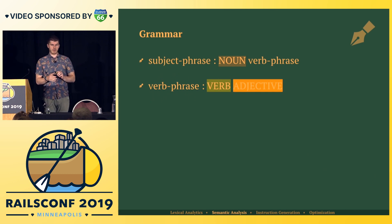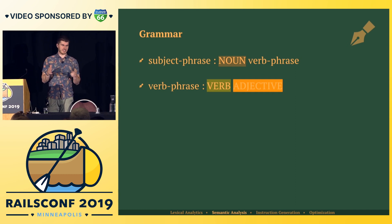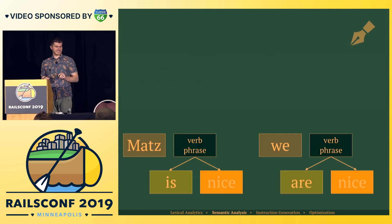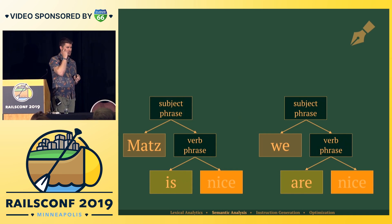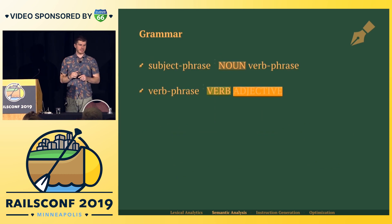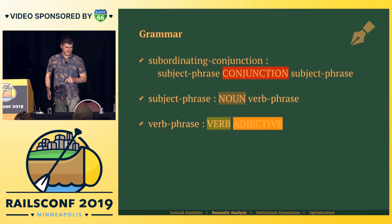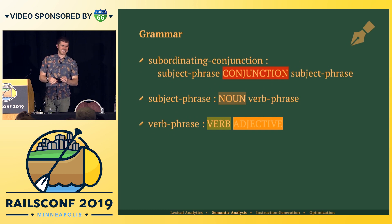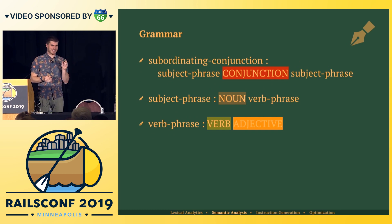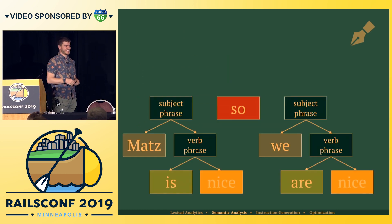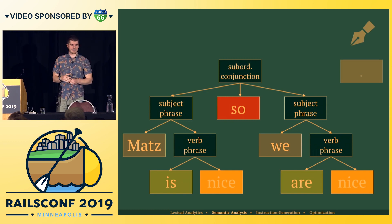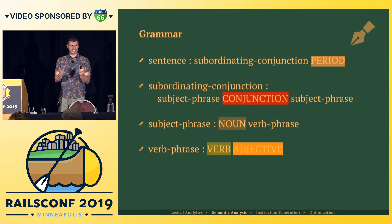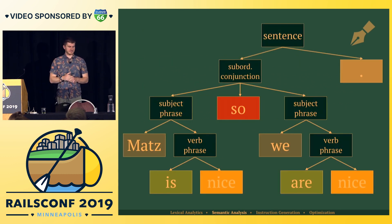I don't actually remember very much about grammar, but this is what we're going to call it for this talk. So we have two subject phrases. Then we add 'so' in the middle — that's called a subordinating conjunction. Someone told me after my last talk that it's actually an adverb, I don't care — that's not the purpose of this talk. The last token is a period. For the purposes of our grammar, a sentence is a subordinating conjunction plus two subject phrases plus a period.